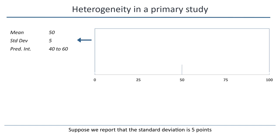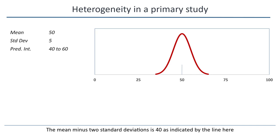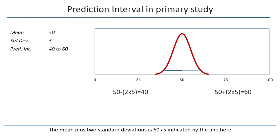Suppose we report that the standard deviation is 5 points. If we assume that the scores follow a normal distribution, we can plot the distribution of scores based on this mean and standard deviation. We intuitively understand that most students score in the range of 40 to 60. Because if the scores are normally distributed, some 95% of students will score within two standard deviations of the mean. The mean minus two standard deviations is 40, and the mean plus two standard deviations is 60.